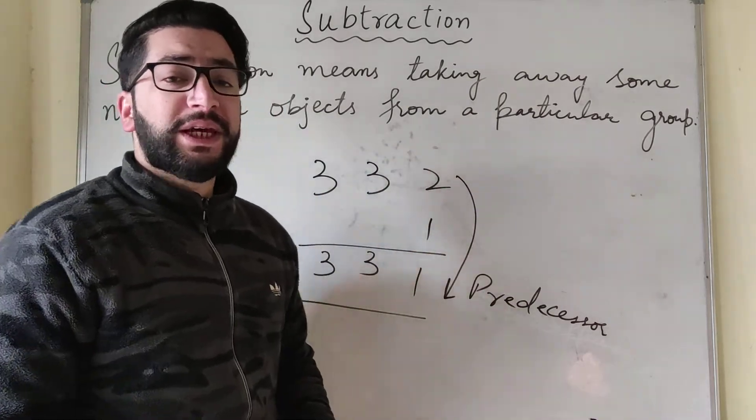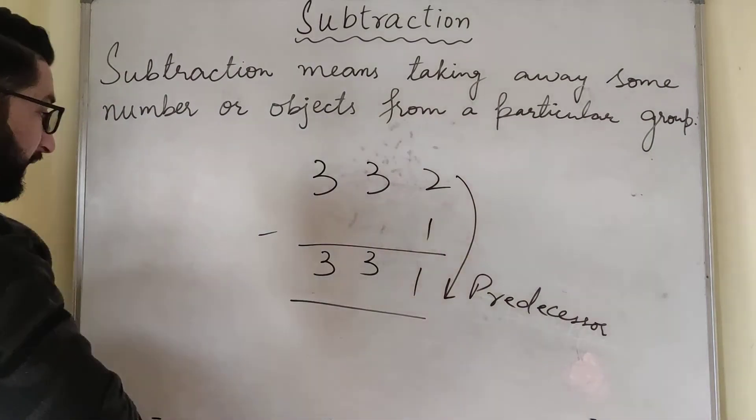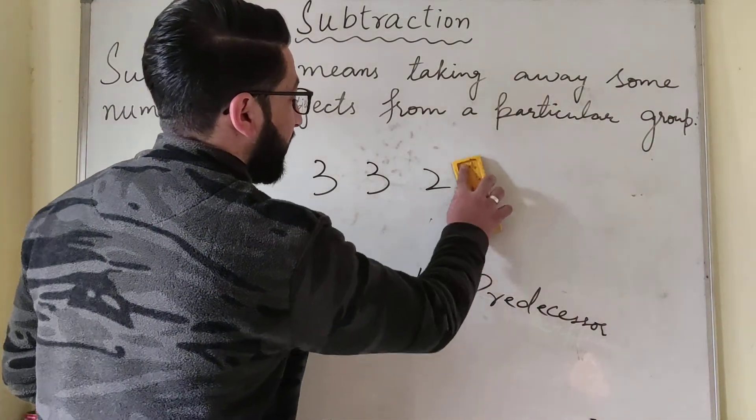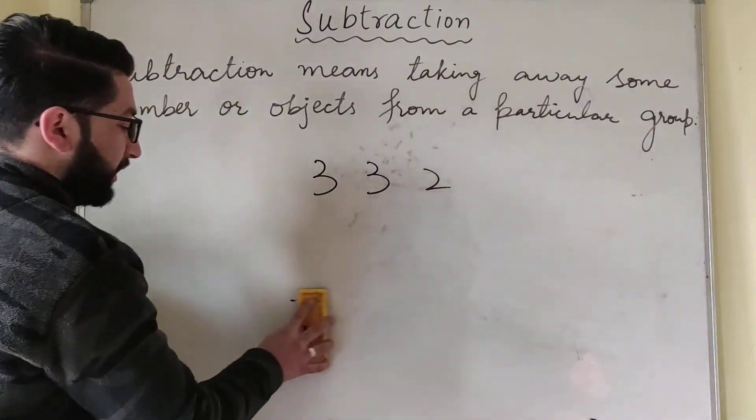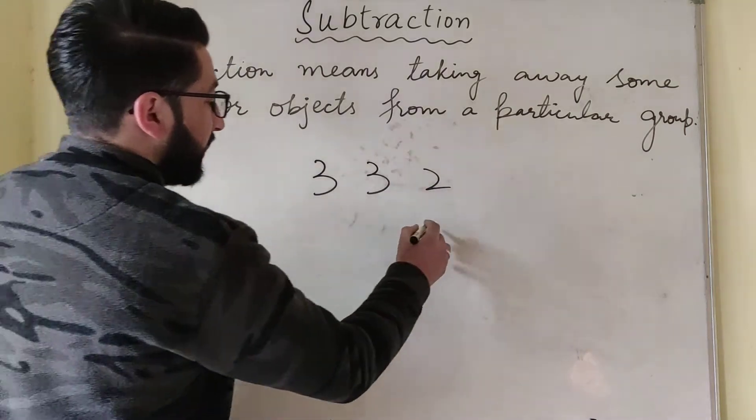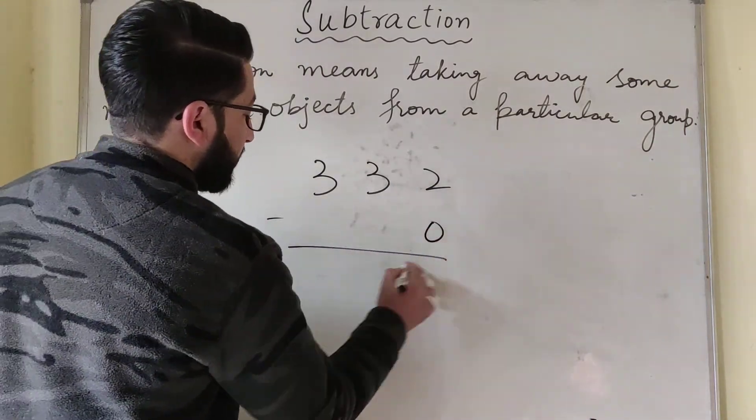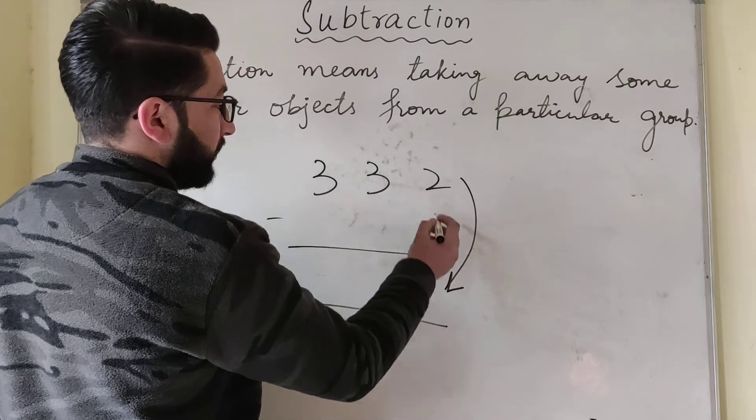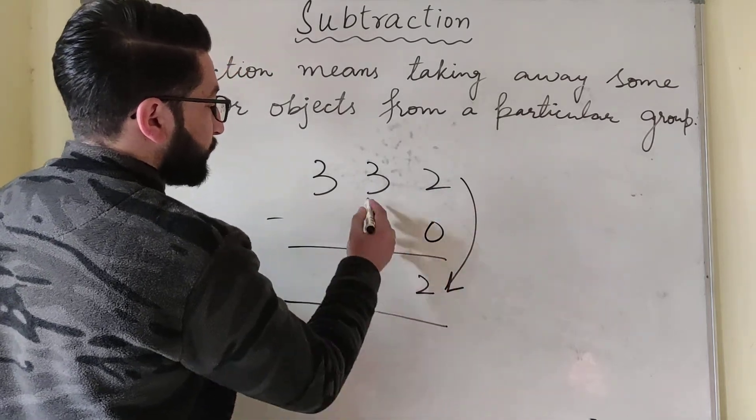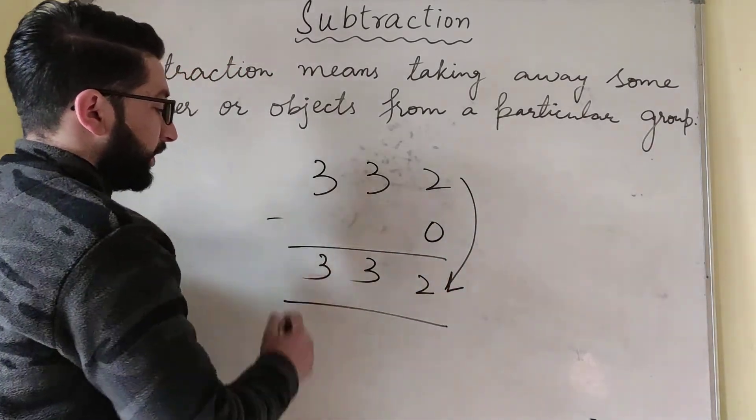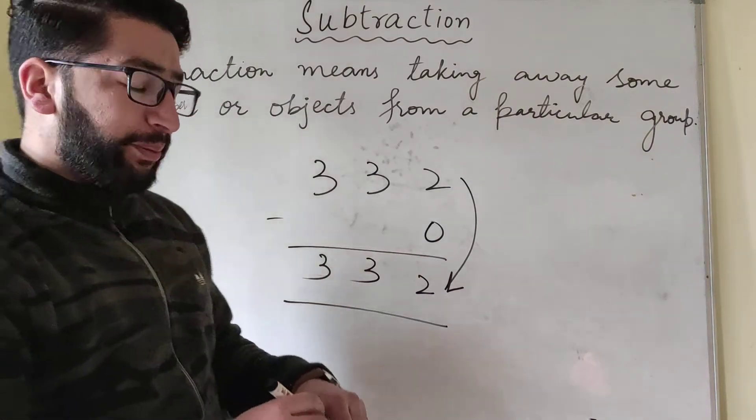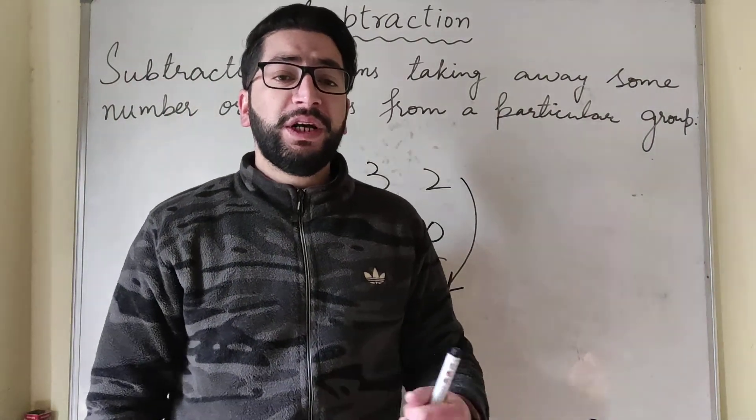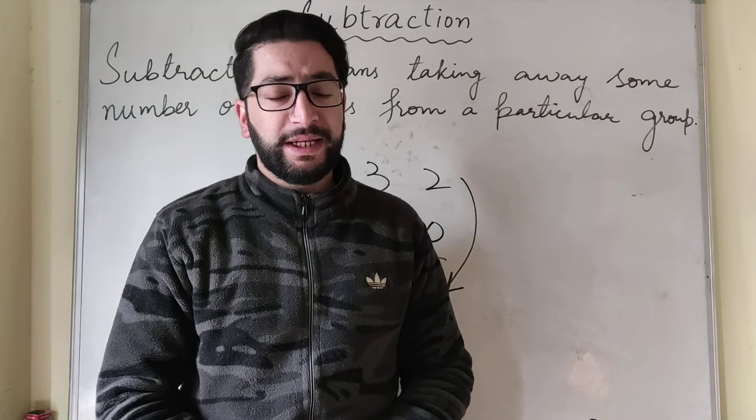Same if we subtract 0 from a given number. If we subtract 0 from a number, we get the same number. So 2 minus 0 is 2, here it is 3 and here it is 3. Whenever we subtract 0 from a given number, we will get the same number as our answer.